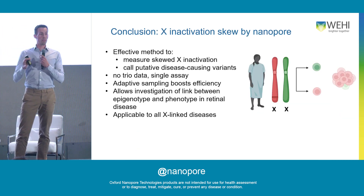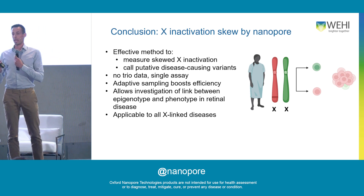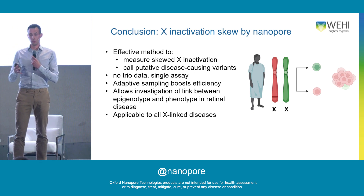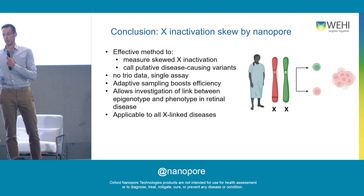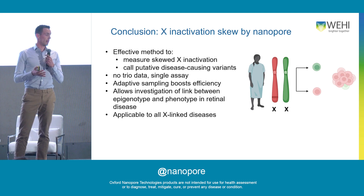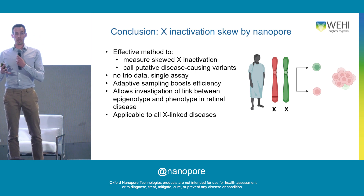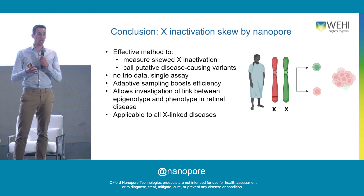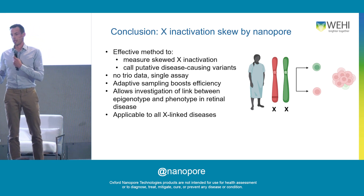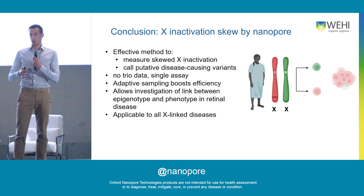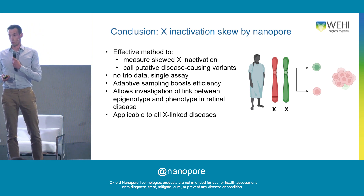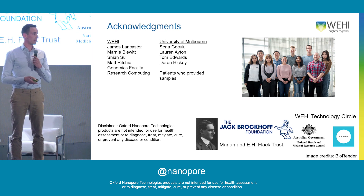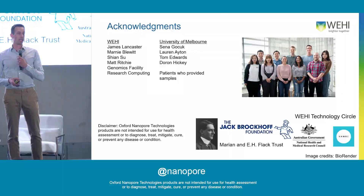In conclusion, always remember that females are mosaics and take that into account when examining the link between genotype and phenotype. One way to do this is to calculate X inactivation skew, and I've shown you a method to do this with long native DNA reads. We use this to better understand how females are affected by retinal diseases, but this is applicable to all X-linked diseases and X-linked risk variants — including polygenic risk scores. I'd expect this method to be rolled out into routine long-range genomics pipelines. I'd like to thank the Bluitt and Ricci labs at WEHI, our collaborators at the University of Melbourne, and our patients and funders. Thank you.